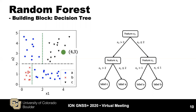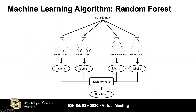However, a single decision tree may not achieve desired performance, so we apply random forest. Instead of using only one decision tree, random forest utilizes K decision trees, where each decision tree makes the classification independently. Eventually, a majority vote is conducted, so random forest outputs the label with the most votes.